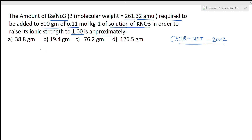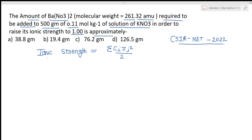First, you should know the formula for ionic strength. If you don't, you can see my electrochemistry lectures — I've already made a lecture on ionic strength and will provide the link in the description box. Ionic strength is given by: I = ½ Σ cᵢzᵢ². For each component, take its concentration and the square of its charge — no plus or minus sign — then sum all terms and divide by two.